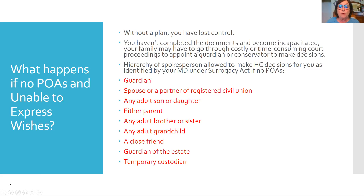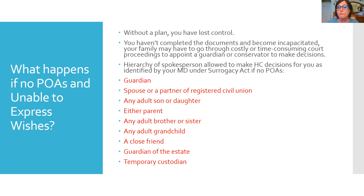What happens if there are no POAs and you're unable to express your wishes? Without a plan, you've lost control. Your family may have to go through costly, time-consuming court proceedings to appoint a guardian or conservator. In Illinois, the Surrogacy Act provides a hierarchy: a guardian if there is one, otherwise a spouse or registered civil union partner, then any adult son or daughter, either parent, any adult brother or sister, any adult grandchild, a close friend, or a guardian of the estate or temporary custodian.